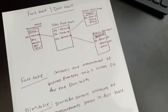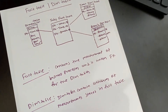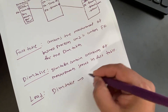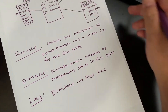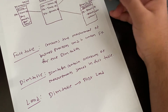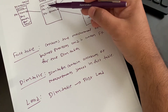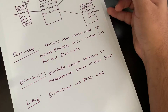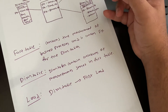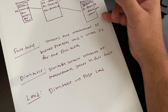From a load perspective, the dimension table has to be loaded first. Why? Because the dimension table has the primary key which is a unique number along with all the details. The fact table contains foreign keys, so without any primary key or data available in the dimension table, we cannot load the fact table.